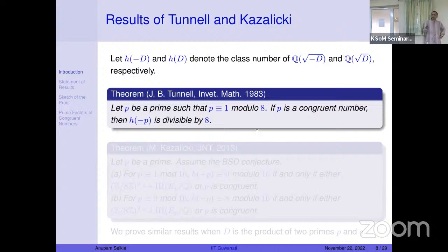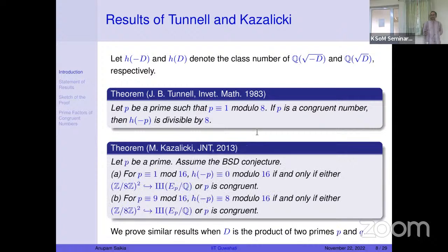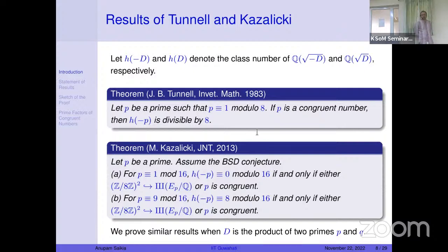To mention a specific result: if we take a prime p congruent to 1 mod 8, then if p is congruent, the class number h(−p) is divisible by 8, or equivalently, if h(−p) is not divisible by that factor then p is not congruent. Similar work was done by Česnavičius in 2013 with a stronger statement assuming BSD: for a prime p ≡ 1 mod 16, sixteen divides the class number if and only if p is congruent, and similarly for p ≡ 9 mod 16.